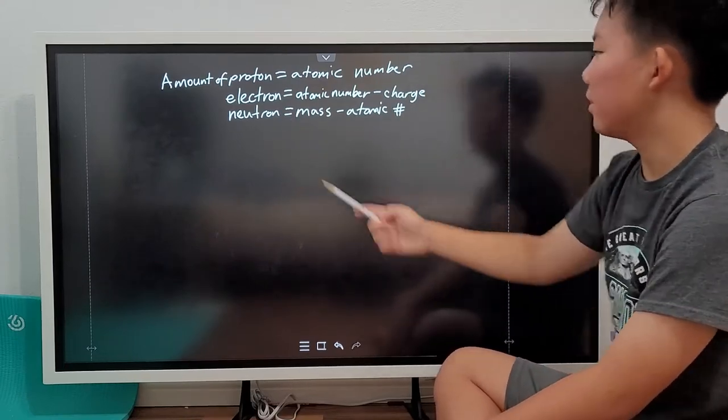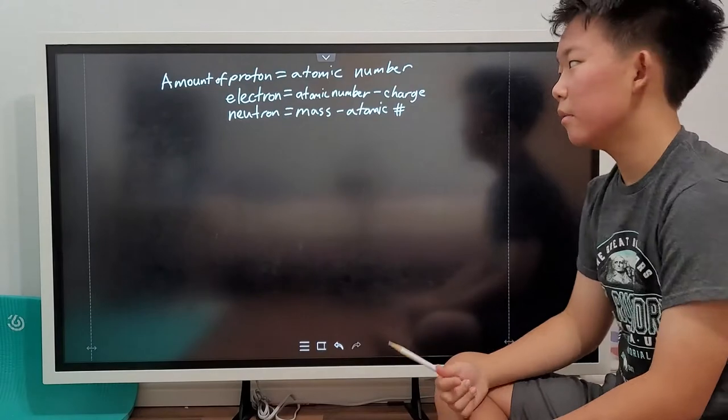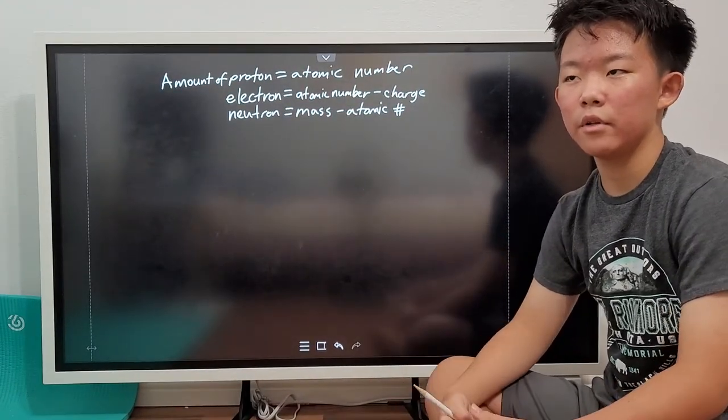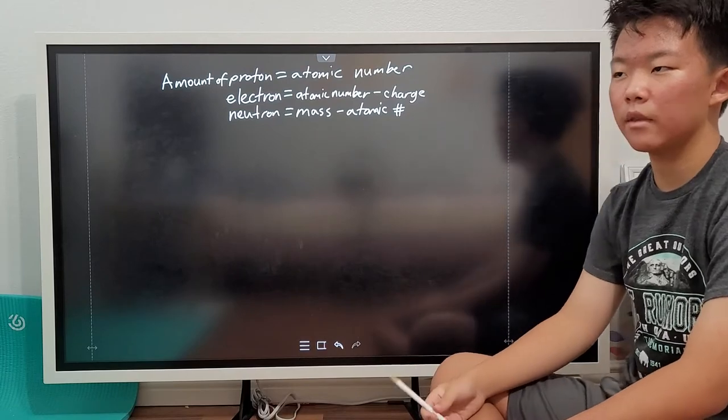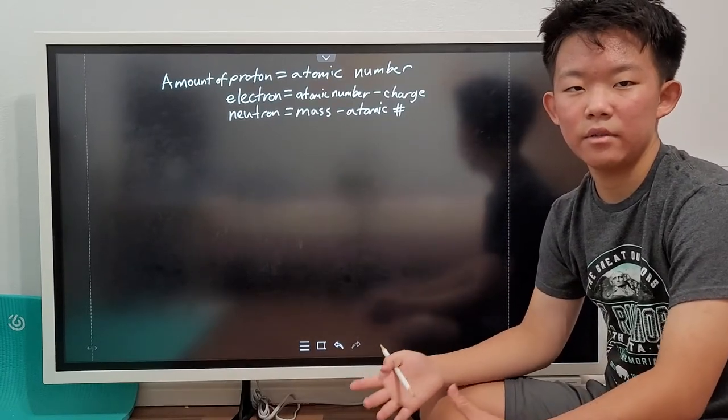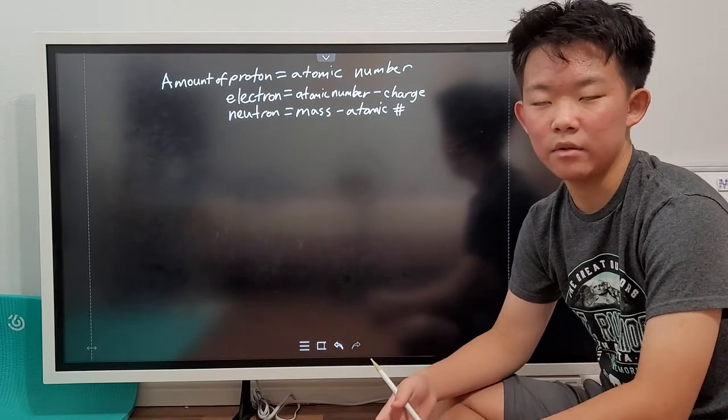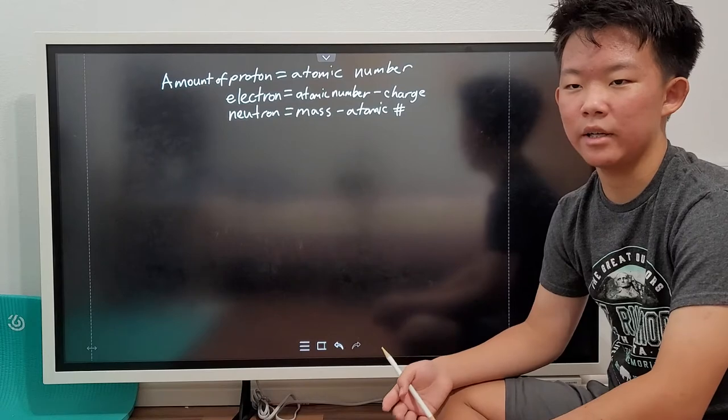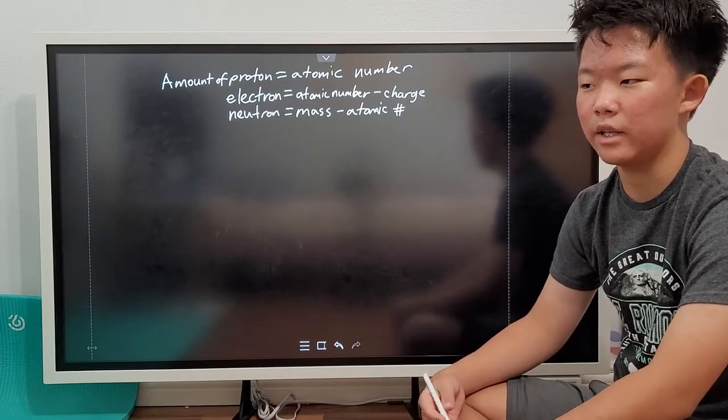Lastly, the neutrons are probably the most complex because you need to know the entire mass of the element before you know the amount of neutrons. So, because there are many isotopes of elements, you need to know the specific isotope you're talking about before you say, oh, this isotope has, say, 44 neutrons or 46 or 49.